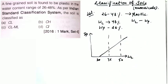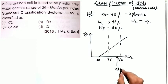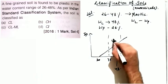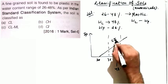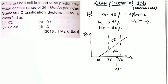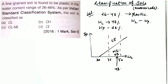Since the liquid limit is 48%, it lies in the intermediate zone — between 35 and 50. This region contains MI (intermediate plasticity silt) and CI (intermediate plasticity clay). It could also be OI (organic intermediate), but since no condition for organic soil is given in the question, we do not classify it as organic.